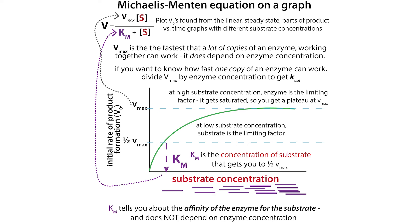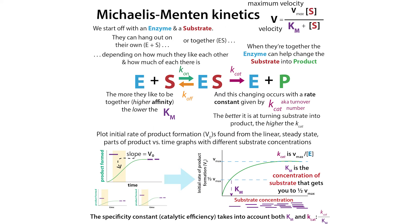If you have a higher affinity, that Km is going to be lower — it takes less substrate to get to that halfway point. An enzyme with higher affinity is going to have a lower Km. But the actual velocity also depends on how fast you're snapping the sticks — how well you can actually turn them from grabbing to product. That's the turnover, the catalytic rate constant — your Kcat.